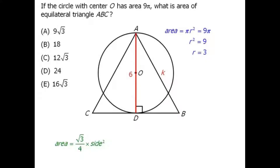Triangle ABC is an equilateral triangle, so all three angles must equal 60 degrees. Focusing on a smaller triangle within the figure, we already know two of our three angles, so we can calculate the third angle to be 30 degrees. This red triangle is a 30-60-90 degree right triangle.